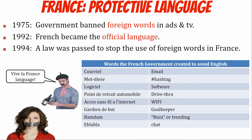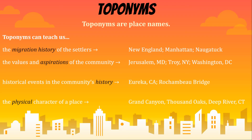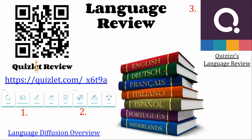Toponyms — place names — can show migration history, aspirations, or the physical characteristics of a place, as we saw previously with cultural landscape. That wraps up this language review, and there will be quizzes in class.